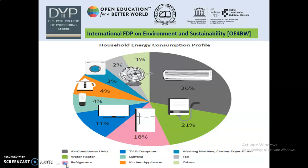The graph represents the consumption of household utility: 36% of energy was consumed by air conditioner, 21% water heater, 18% refrigerator, TV and computer, 11% lighting, 4% kitchen appliances, 4% and 3% washing machine, 2% by fan, and remaining 1% by other utilities.